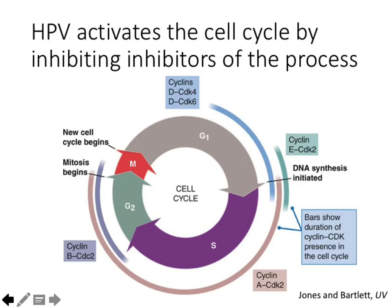For example, in mitosis there's a checkpoint to make sure chromosomes are lined up correctly on the metaphase plate. There's also a checkpoint at G2 and at G1. Cells don't usually just begin S phase — most often, cells halt at G1 unless they have some sort of growth factor.